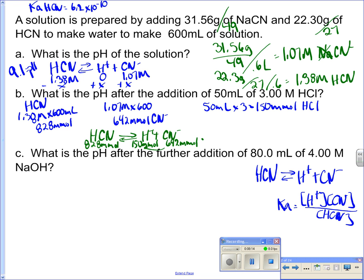Well, when that happens, I'm going to use up the 150 millimoles of H+. And that 150 millimoles of CN-, because it's a one-to-one will also be used. So H+ is my limiting reactant here. So I'm going to have zero of that left. I'm going to have 642 minus 150, which gives me 492 millimoles.